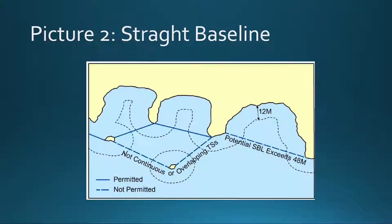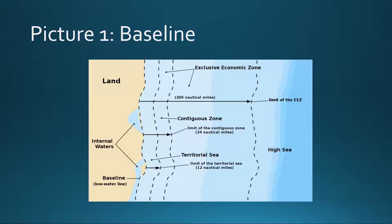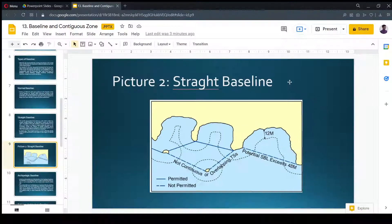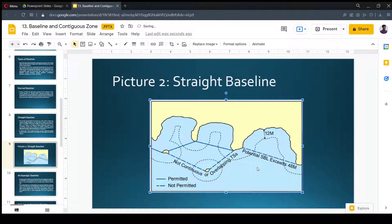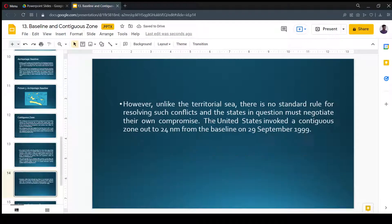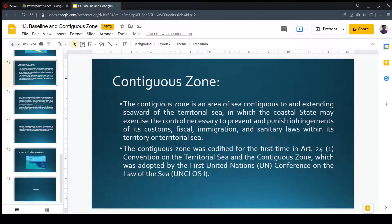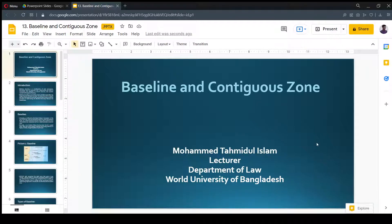This is our lecture. We talked about the baseline and the contiguous zone. The baseline can be measured from the land and from island points, and there are a few types of baselines like straight baselines and archipelagic baselines. The contiguous zone is the 24 nautical mile zone which includes the territorial sea within it as well. I hope you have understood the lecture content. If you face any difficulty, please contact me through the comment section and I will answer you accordingly. Thank you so much for participating in today's class and I hope to see you all in the next class.